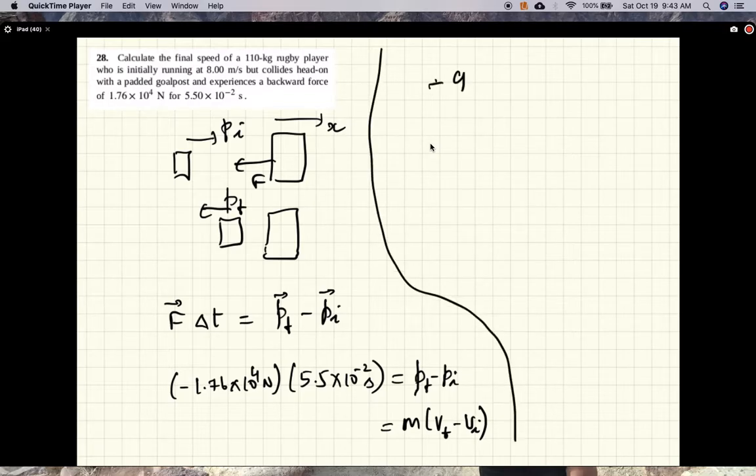Minus 968 equals 110 times V final minus V initial, and V initial is 8 meters per second.